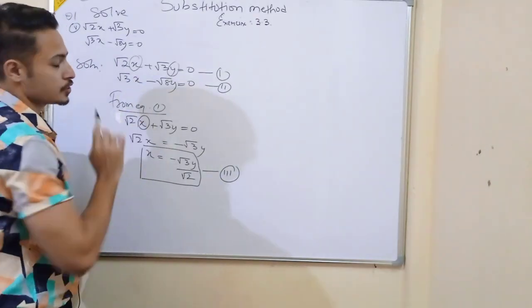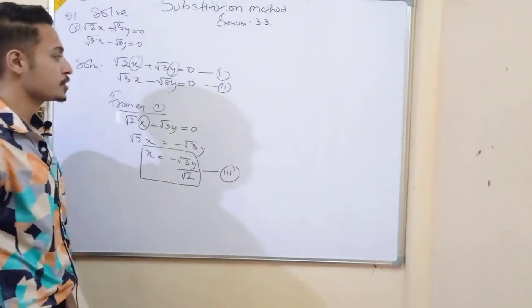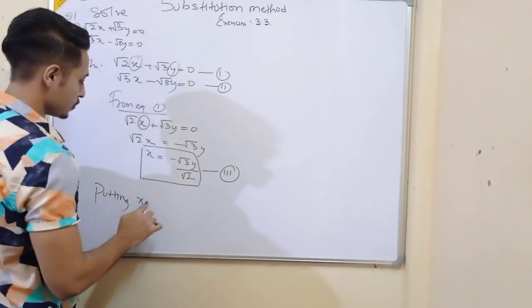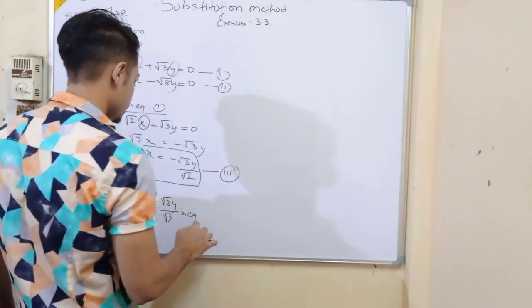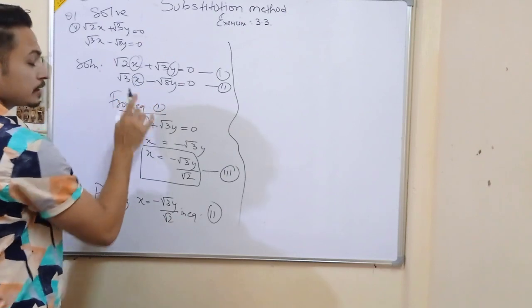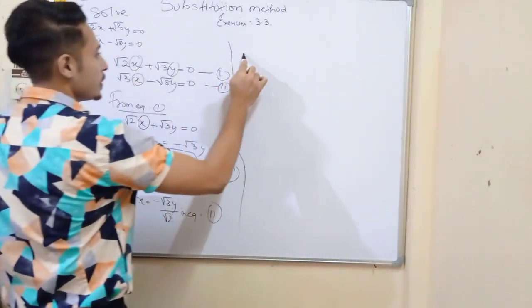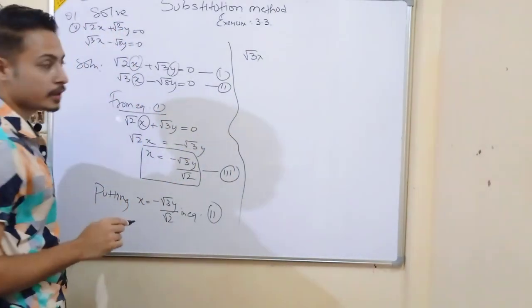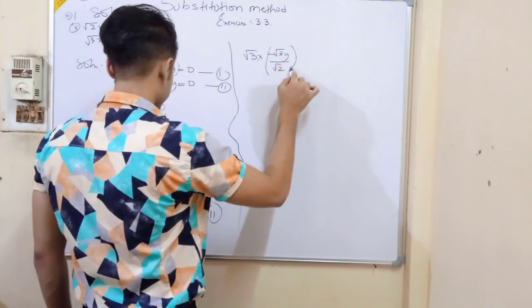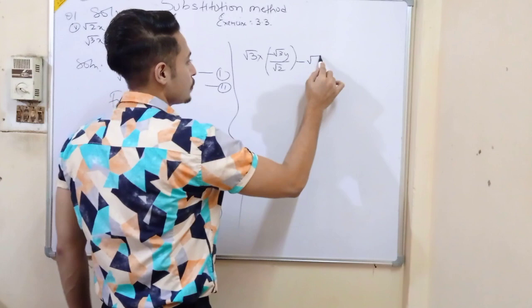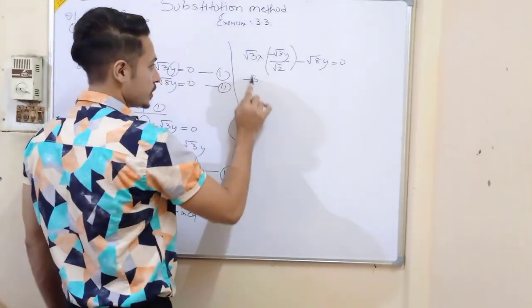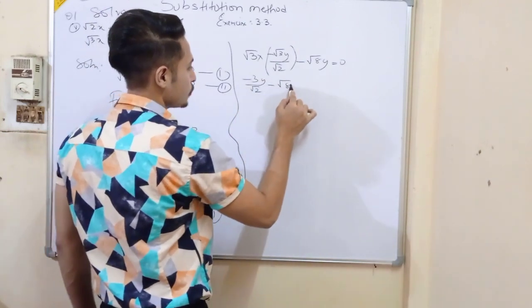We took the value of x from equation 1. Now putting x is equal to minus root 3y by root 2 in equation 2. In equation 2, we replace x. Substitute means replacement. x is equal to this value, so root 3 into x, that is root 3 into minus root 3y by root 2, minus root 8y is equal to 0.